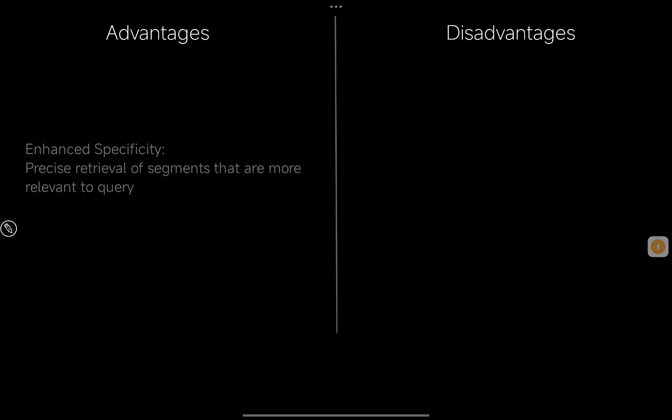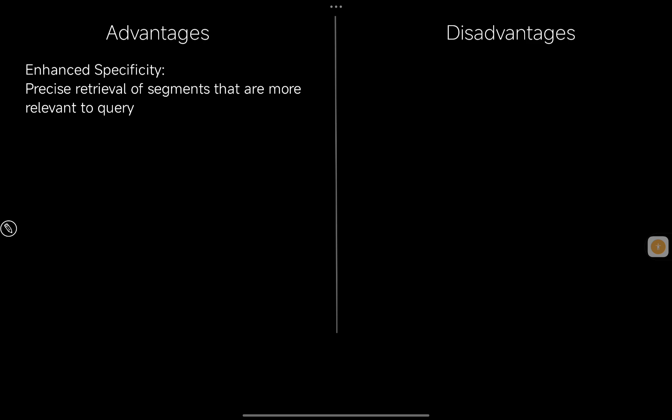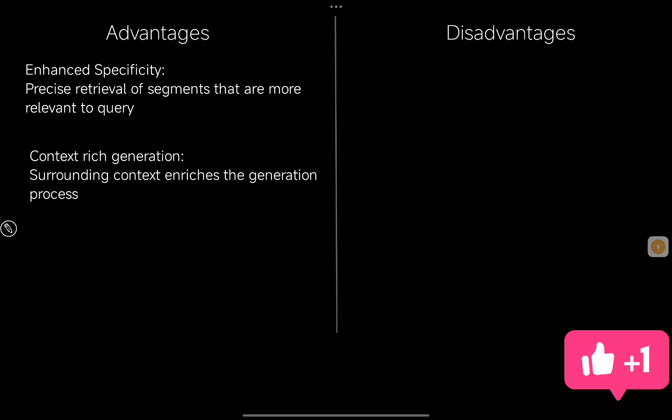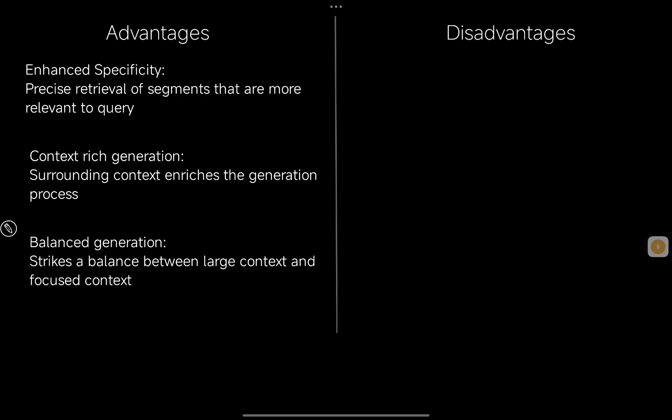Now let's talk about the generic advantages and disadvantages. The first advantage is enhanced specificity: we do precise retrieval of segments more relevant to the query by treating chunks as individual sentences, which can be very specific to the user question. The second advantage is context-rich generation: by enhancing context with surrounding sentences after the retrieval phase, we enrich the context — sending not just the matched sentence but also the sentences before and after it.